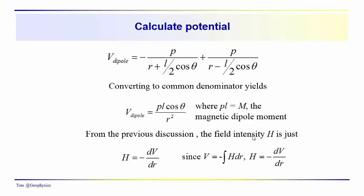Now that we have the potential of the dipole, we can easily get the field intensity H by taking the negative derivative of that potential — going back to the definition that the potential is the negative derivative, and looking at it in terms of field intensity rather than force per unit pole strength. So H equals minus dV/dR.